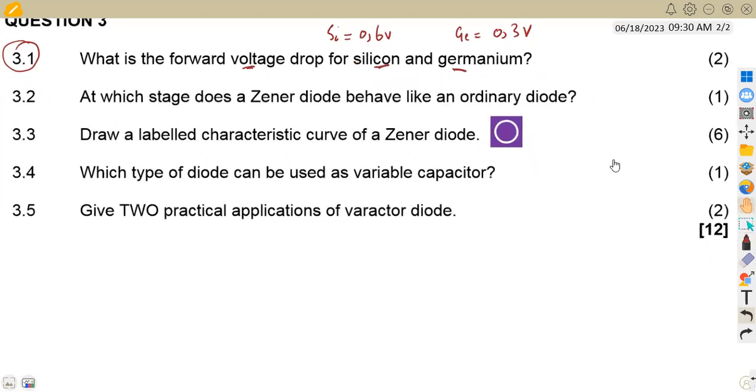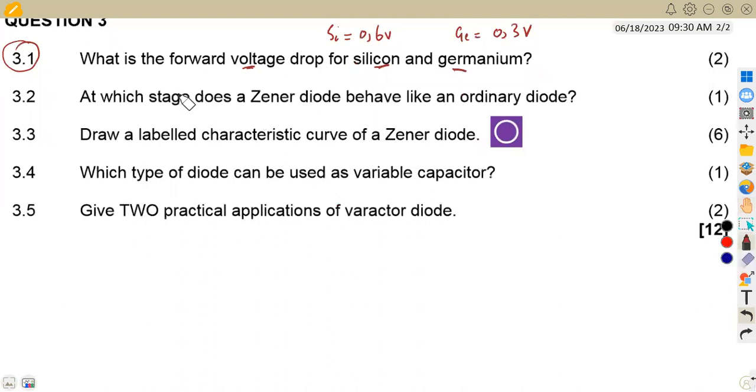On 3.2, at which stage does a Zener diode behave like an ordinary diode? Remember a Zener diode is used basically for reverse bias when it is in reverse state. That is the major part where we are using a Zener diode.